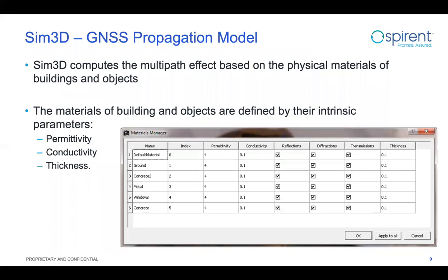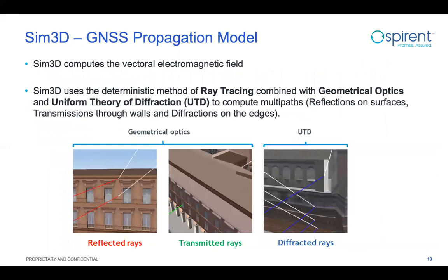A closer look at the materials manager. Sim3D computes multipath based on the physical materials of the objects. The materials themselves have intrinsic properties which can be manipulated by a user, though we highly recommend not manipulating them unless you're an expert — you're better off importing our materials library and toggling the different ray types. We have three kinds of rays: reflected, transmitted, and diffracted. All have their own representations and change based on the materials they interact with.